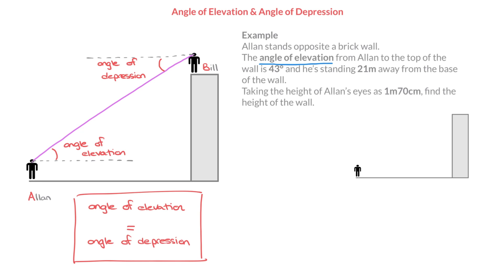First of all, the angle of elevation from Alan to the top of the wall is 43 degrees. To illustrate that, I'll draw a horizontal line leaving Alan's eyes, and draw it all the way to the wall. Then I draw Alan's line of sight as he looks to the top of the wall. The angle of elevation is the angle between the horizontal and the line of sight pointing upwards — that angle right here is 43 degrees. Next, he's standing 21 meters away from the base of the wall, so the distance from Alan's feet to the base of the wall is 21 meters.